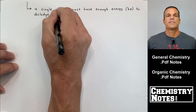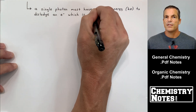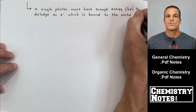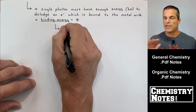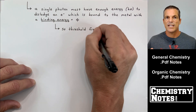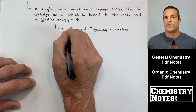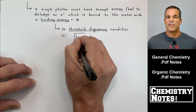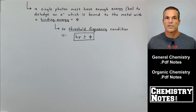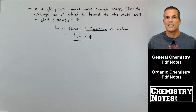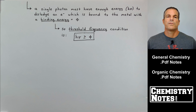Regarding the threshold frequency: a single photon must have enough energy or frequency to dislodge an electron that is bound to the metal with a binding energy equal to φ (the Greek symbol phi — that is not zero, it is binding energy). The threshold frequency condition is: hν must be greater than or equal to φ. If you can overcome the binding energy holding the electron to the metal, the electron will be ejected. As long as hν ≥ φ, the electron is emitted.